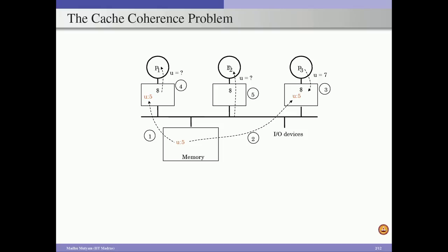If core 2 tries to read from address u, its cache is empty, so the request goes to memory. If core 3's write was not reflected in memory, memory still holds value 5 and supplies that stale data to core 2. So both core 1 and core 2 get wrong data, leading to wrong computation. This is the cache coherence problem.